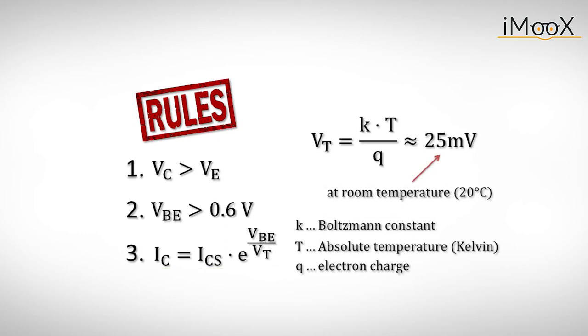VT is defined as the Boltzmann's constant K times the absolute temperature T in Kelvin, divided by the electron charge Q. At room temperature, VT has a value of about 25 millivolts.